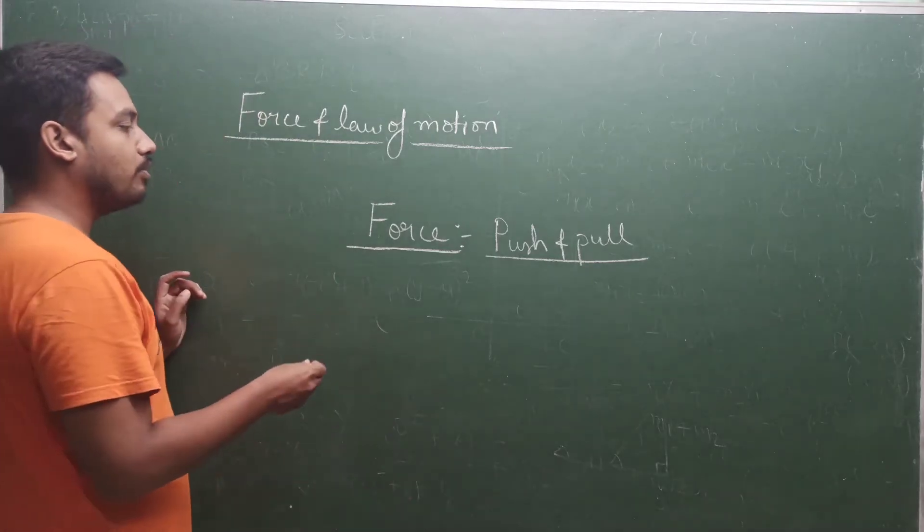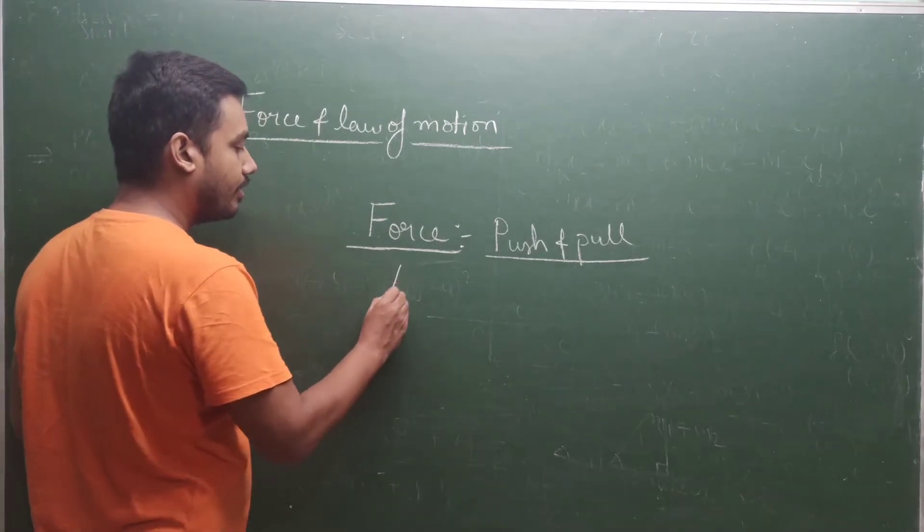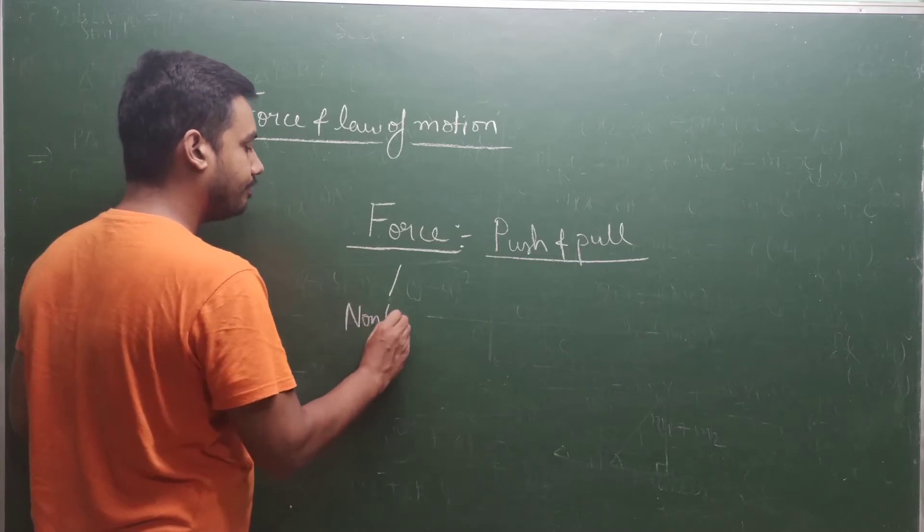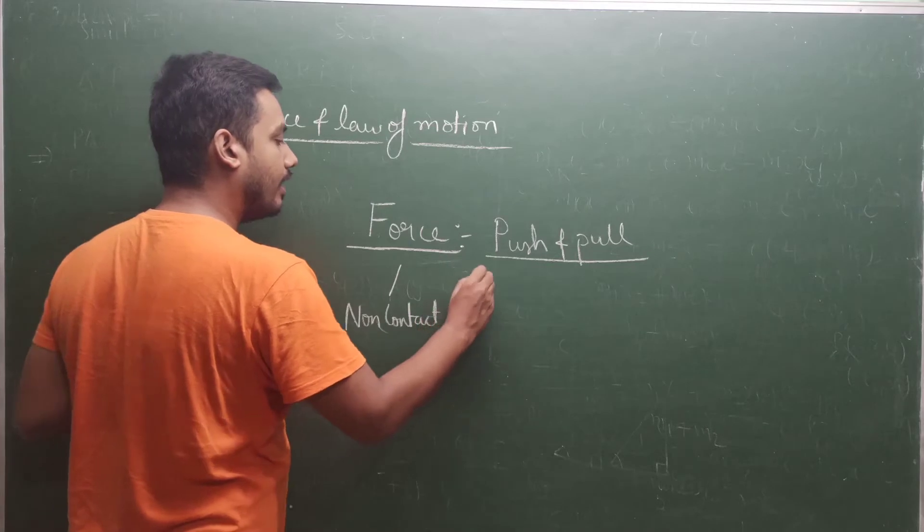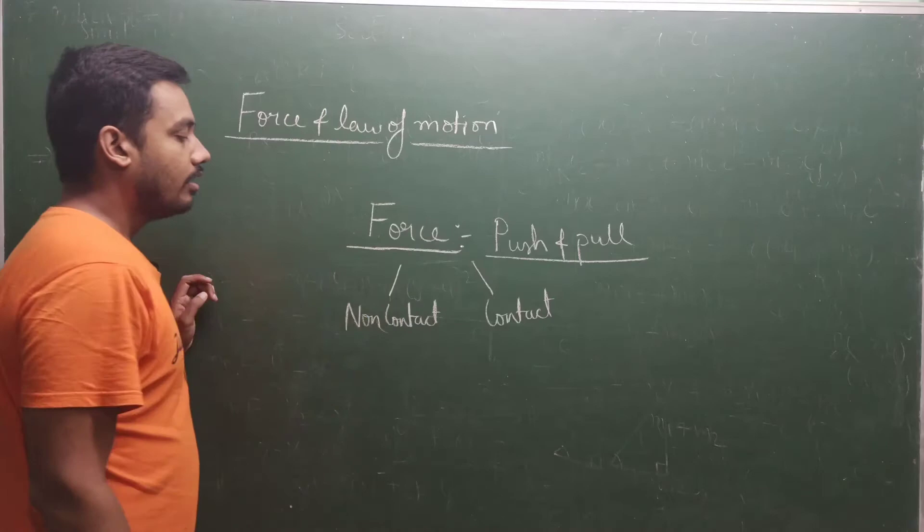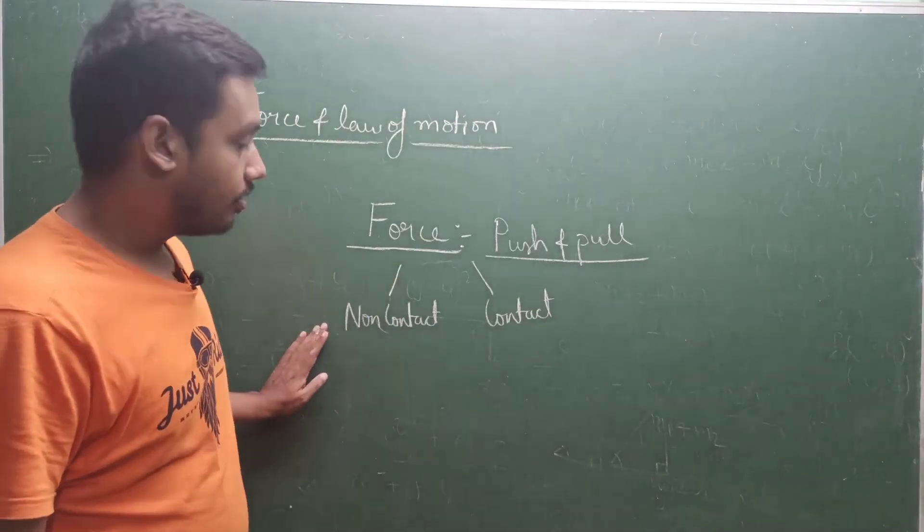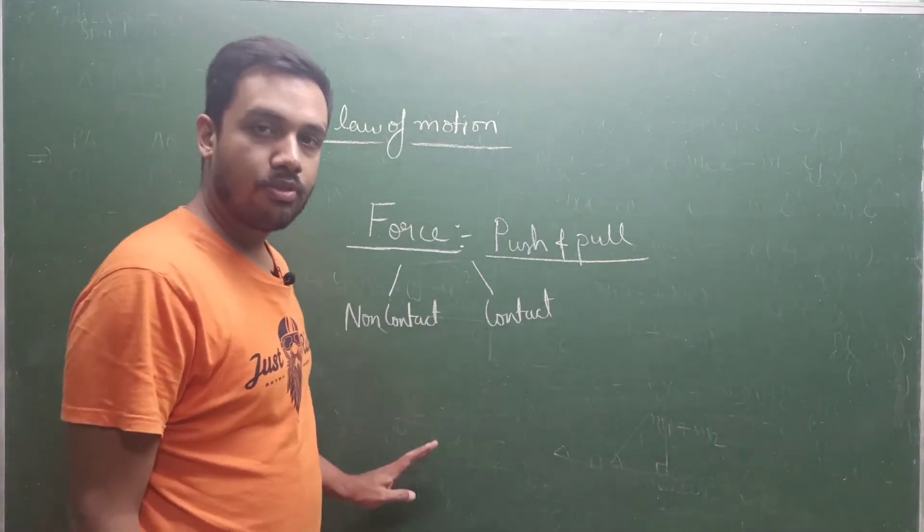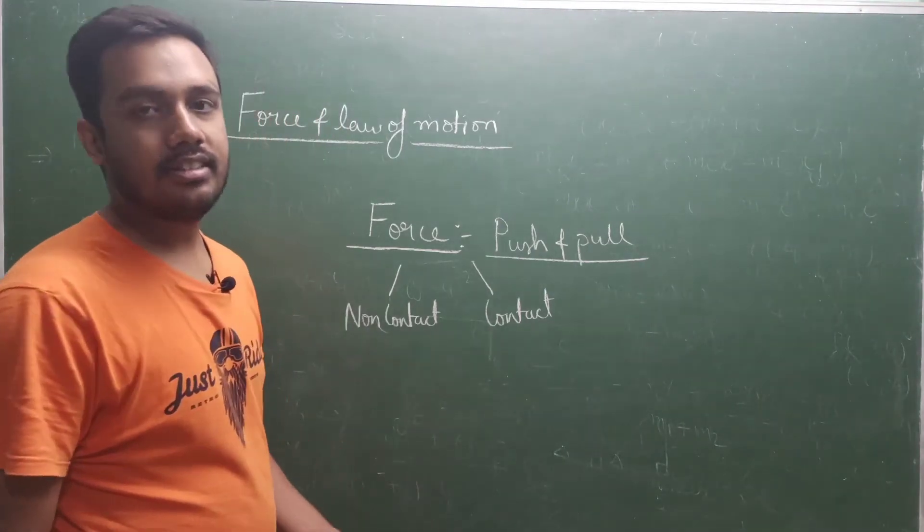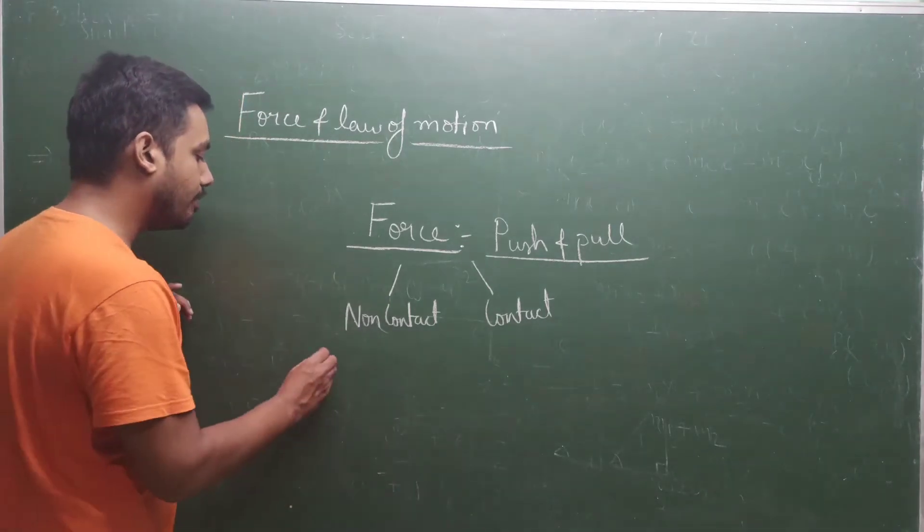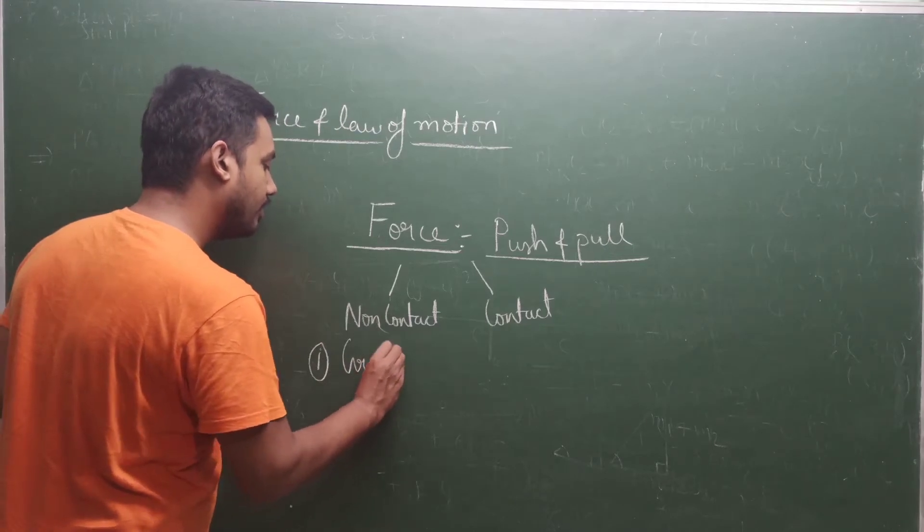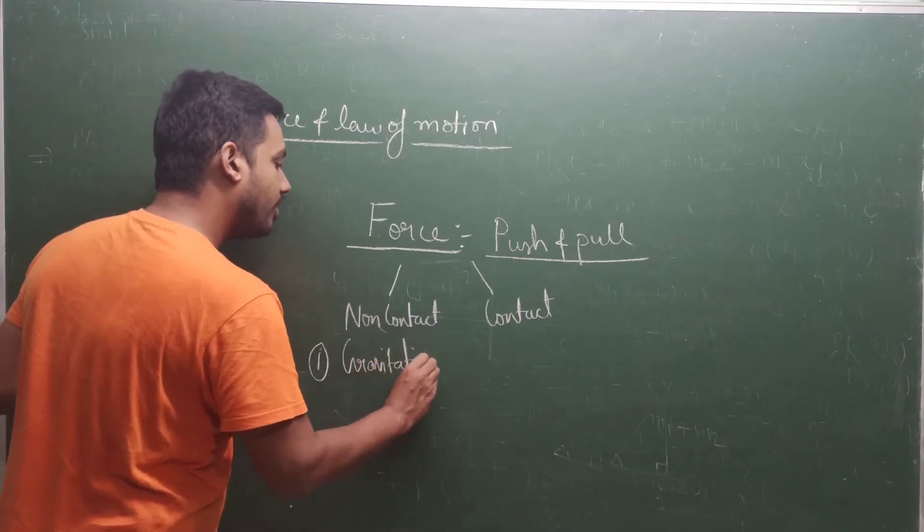Now let's talk about the types of forces. There are two types of forces: one is non-contact and the other one is contact. Non-contact means there is no contact between the object on which the force is being applied and the factor or the agency which is applying the force. A very simple example is gravitational force.